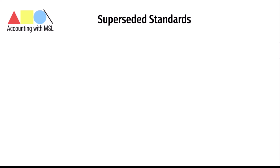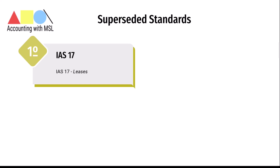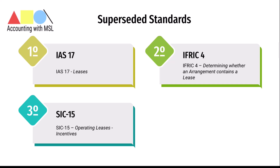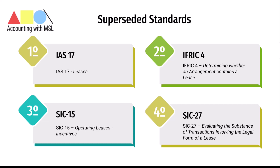When it was issued, IFRS 16 came to supersede or replace a number of standards and interpretations. The first was IAS 17 leases, the old lease standard. Next was IFRIC 4, which gave rules around determining whether an arrangement contains a lease. Then SIC 15, which provided rules around operating lease incentives, and finally SIC 27, which gave rules around evaluating the substance of transactions involving the legal form of a lease.